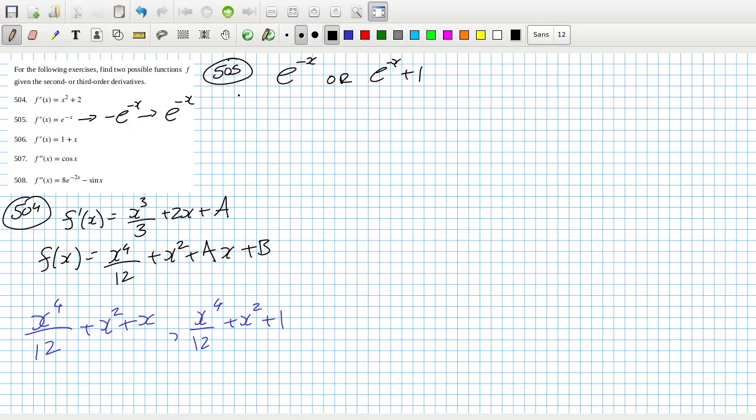Yeah okay, it's a really weird question. 506: one would become x plus x squared over 2, so that would be x squared over 2 plus x cubed over 6, or the same again but I don't know, just put a plus 1 at the end. It's a really dumb question. 507: